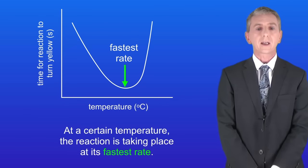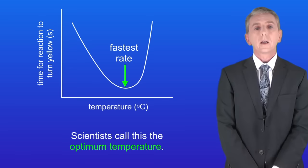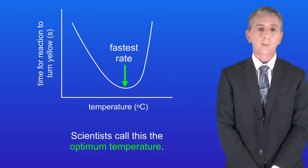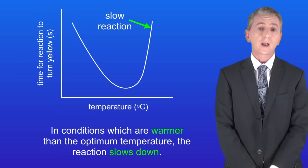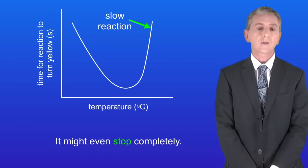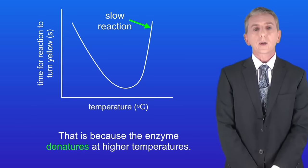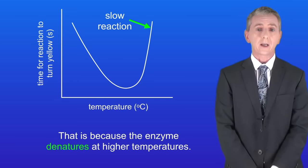At a certain temperature, the reaction is taking place at its fastest rate, and scientists call this the optimum temperature. However, in conditions which are warmer than the optimum temperature, the reaction slows down and it might even stop completely. That's because the enzyme denatures at higher temperatures.